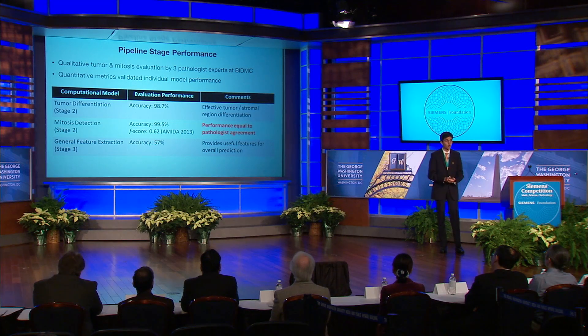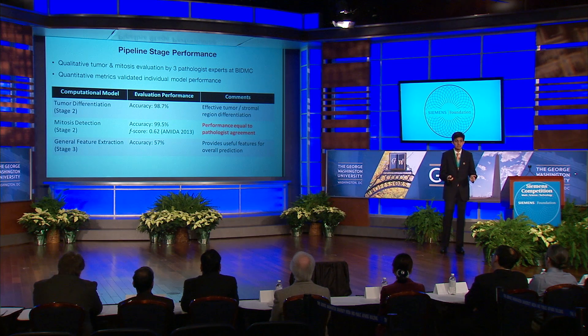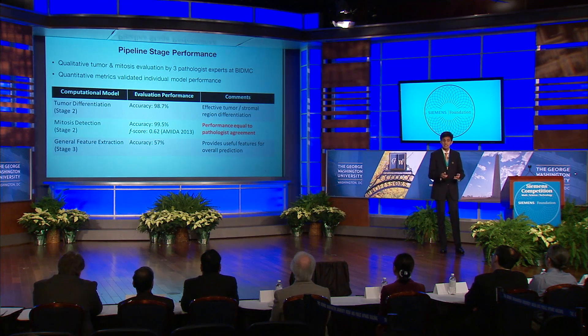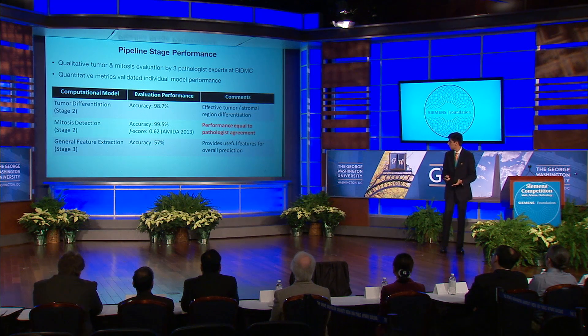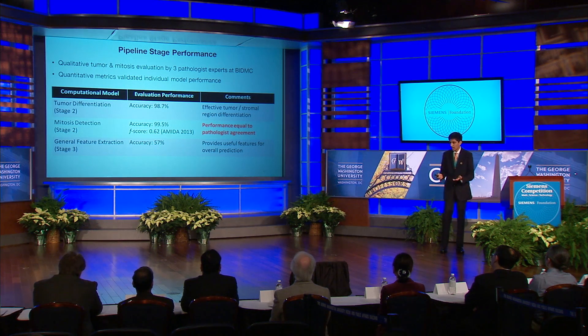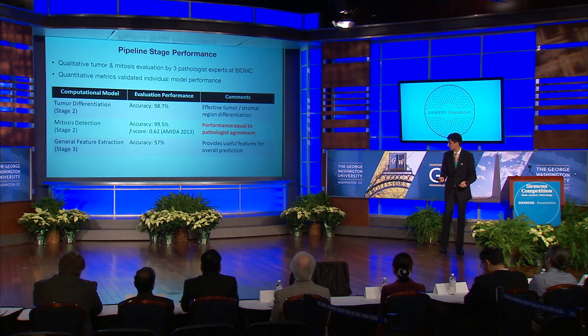To evaluate the individual performances of my pipeline, I perform both quantitative evaluation and ask pathologists to perform qualitative evaluation of my output. Specifically, my tumor differentiation approach achieved a 98.7% accuracy, and my mitosis detection approaches achieved an F-score of 0.62 on the AMITA 2013 gold standard dataset. These values indicate performance equivalent to pathologist agreement and overall excellent performance. In terms of general feature extraction, my model achieved an accuracy of 57%, providing wholly new structural features critical to diagnosis but not identified by pathologists or prior work.